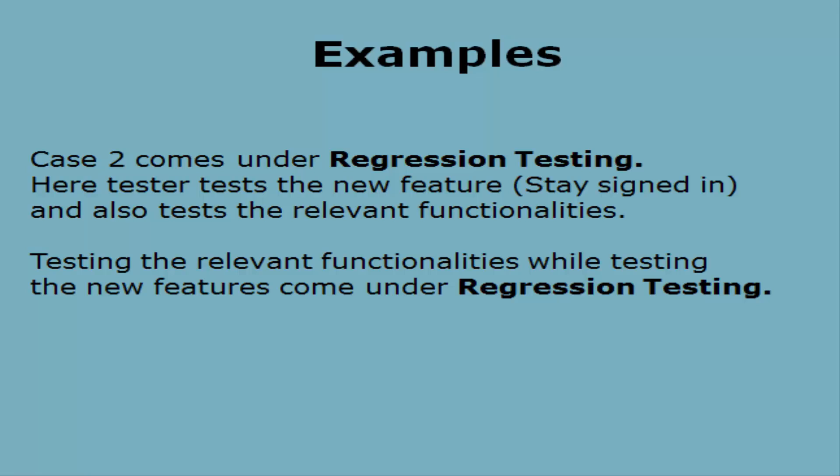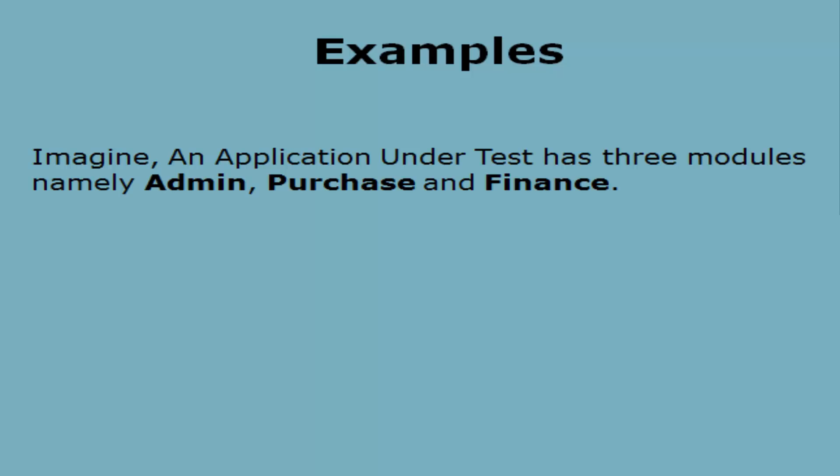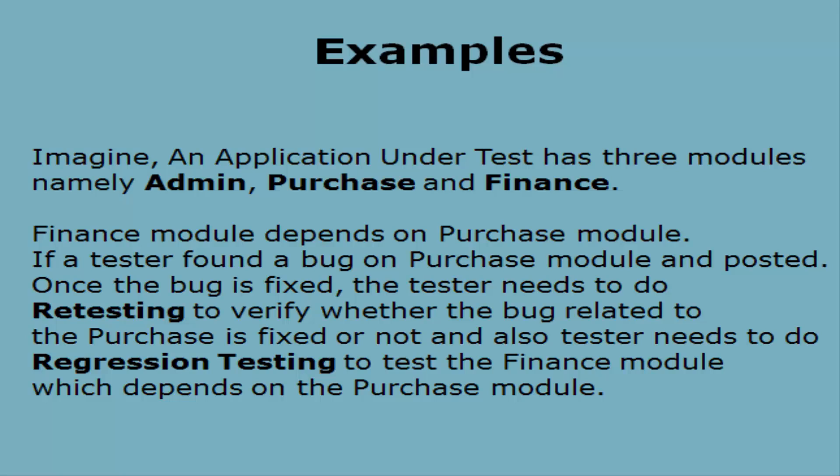Another example: imagine an application under test has three modules — Admin, Purchase, and Finance. The Finance module depends on the Purchase module. If a tester finds a bug in the Purchase module and posts it, once the bug is fixed, the tester needs to do retesting to verify whether the bug in Purchase is fixed. The tester also needs to do regression testing on the Finance module, which depends on Purchase.